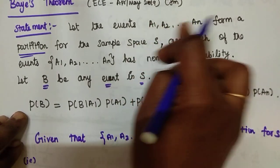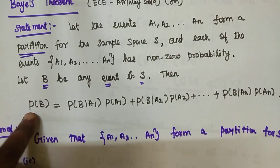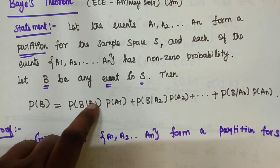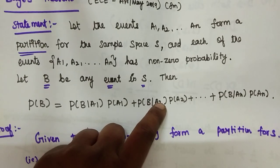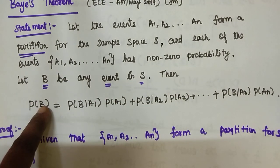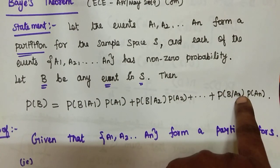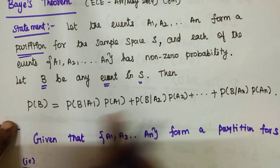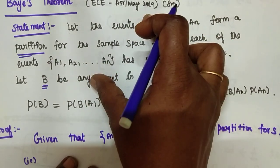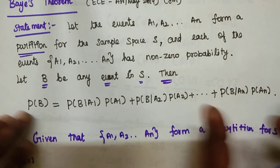If we have N events, we will find N events. For this partition, the probability of B — we will find P of B. This is the formula and this is the assumption. Then we have to prove this formula.